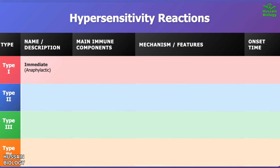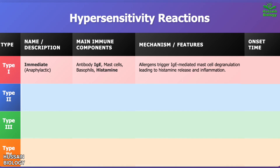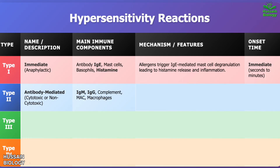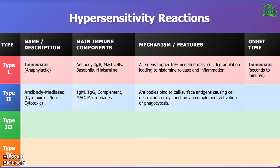There are four types of hypersensitivity reactions. Type 1, called immediate or anaphylactic, involves IgE antibodies, mast cells, basophils, and histamine. Allergens trigger IgE-mediated mast cell degranulation, releasing histamine and causing inflammation, occurring immediately within seconds to minutes. Type 2 is antibody-mediated, either cytotoxic or non-cytotoxic, involving IgM, IgG, complement, MAC, and macrophages. Antibodies bind to cell surface antigens causing cell destruction or dysfunction through complement activation or phagocytosis, occurring within minutes to hours.